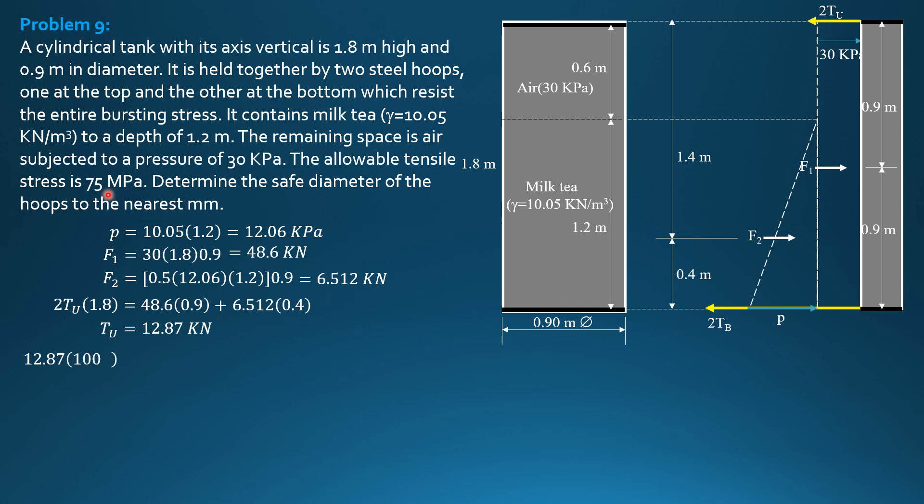So 12.87 times 1000 equals 75 times pi over 4 diameter upper hoop squared. So we compute the upper hoop diameter as 14.78 millimeters. So we use 15 millimeter diameter in the upper hoop.